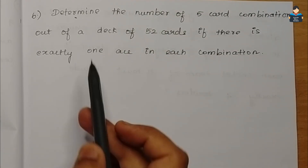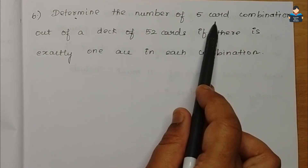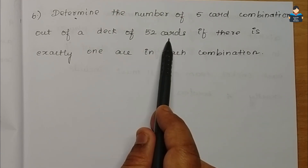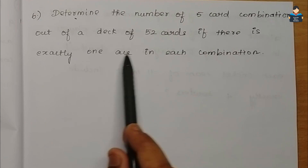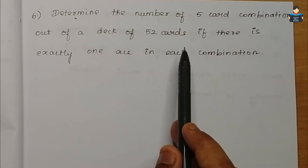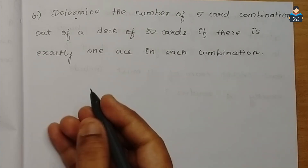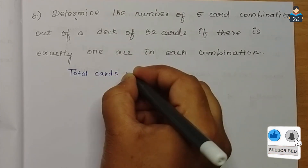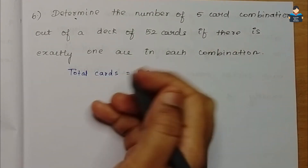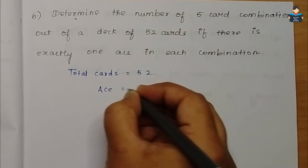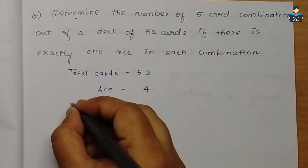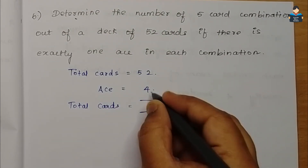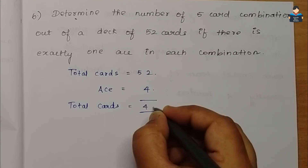So, number of 5-card combinations from 52 cards if there is exactly one ace. Total cards are 52, and ace cards are 4, so total cards remaining are 48.